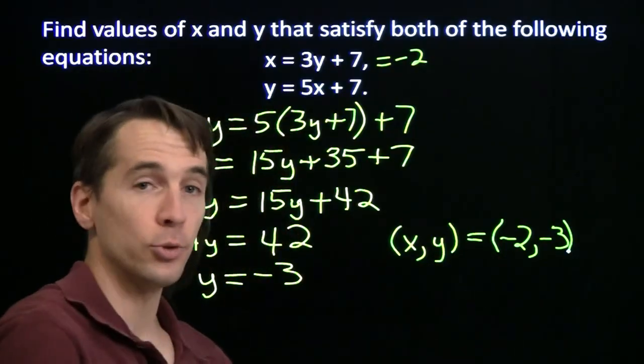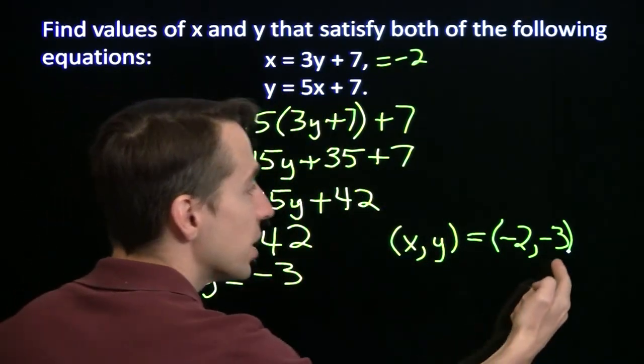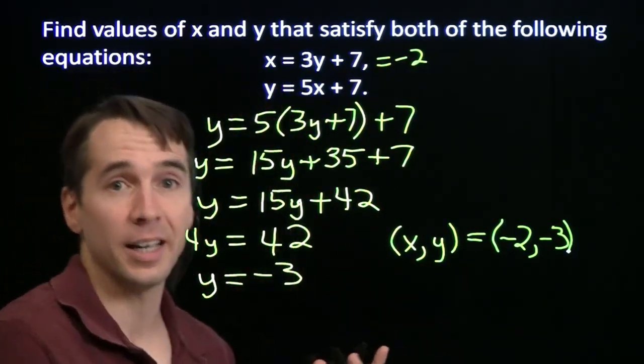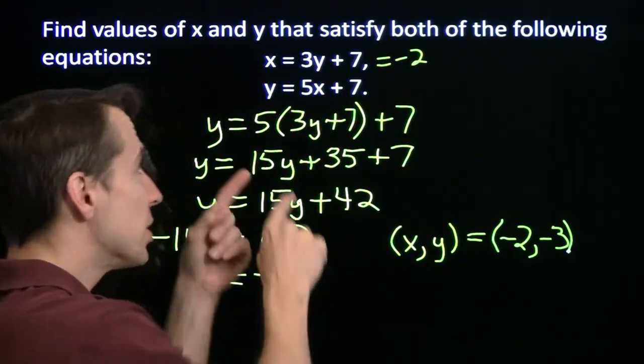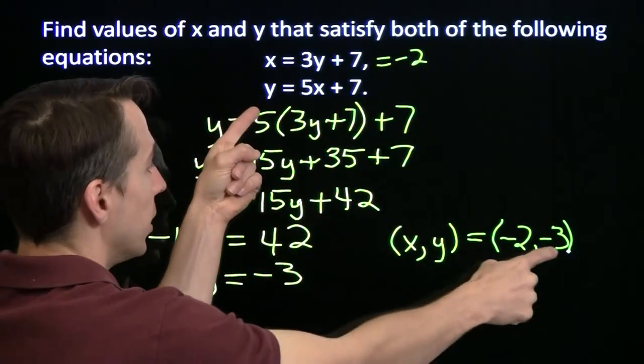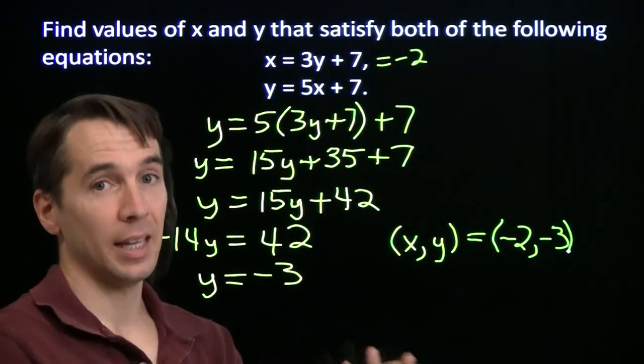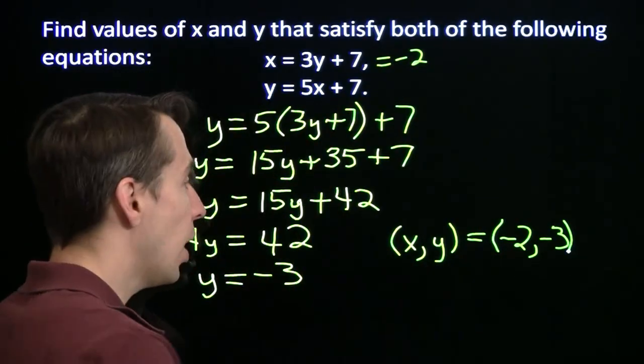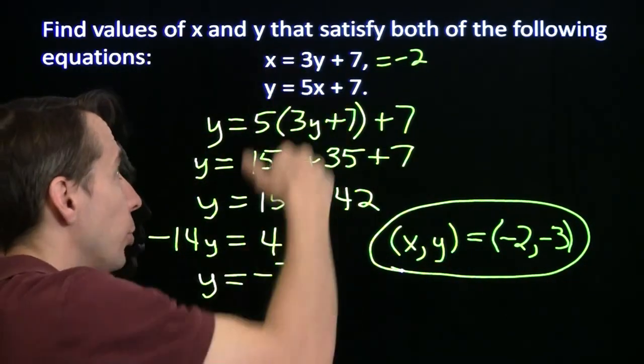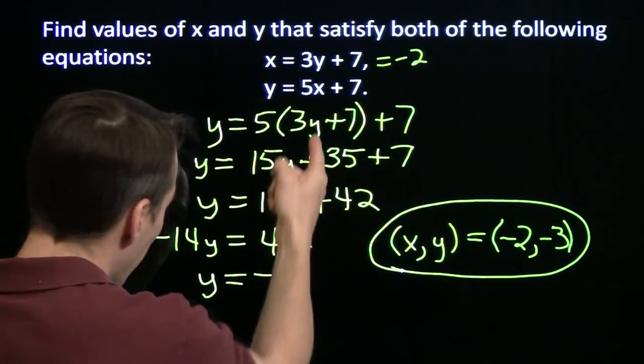And we can test that this solution is correct by putting these values in to these equations up here. Put in negative 2 for x. We get negative 2 on this side. Put in negative 3 up here. 3 times negative 3 is negative 9, plus 7 is negative 2. That's what we did to find x in the first place, so that better work. But we still have to check the other equation. Put in negative 3 for y, you have negative 3 over here. And then here we have 5 times negative 2 is negative 10 plus 7. That gives us negative 3. So this equation works as well. And we've found our solution. We call this a system of equations. We have multiple equations here that all have to be satisfied at the same time.